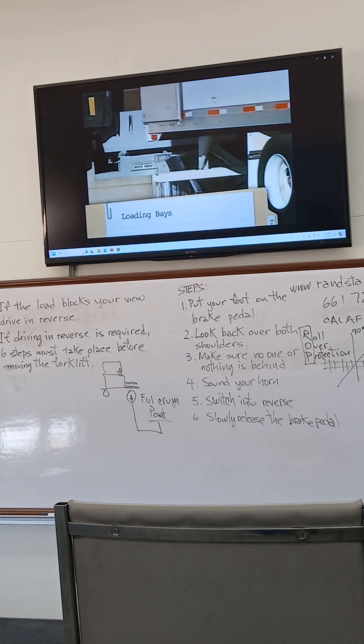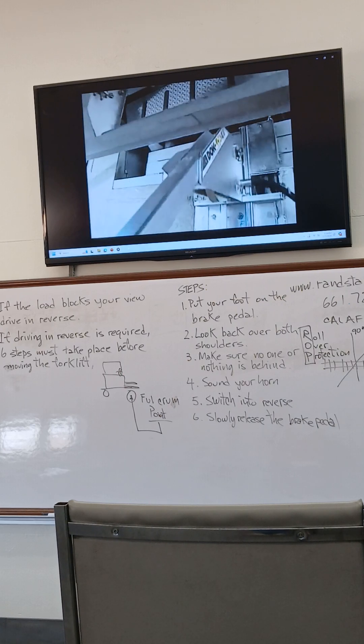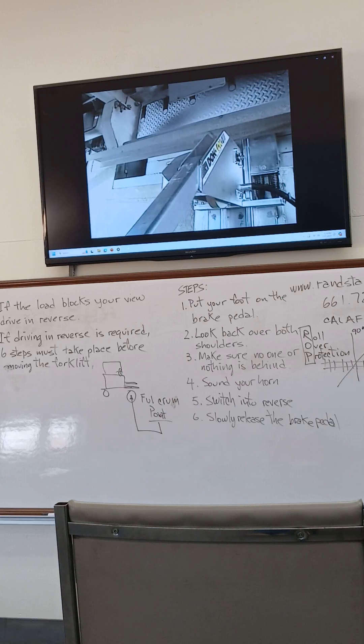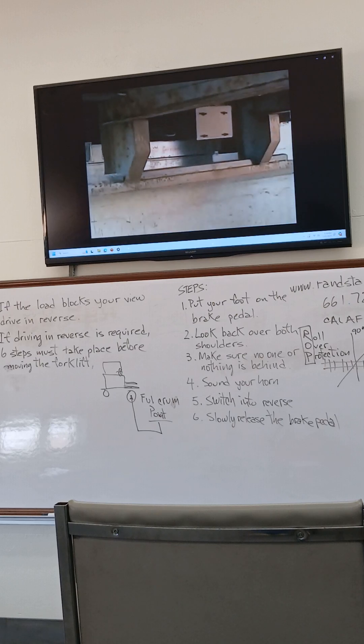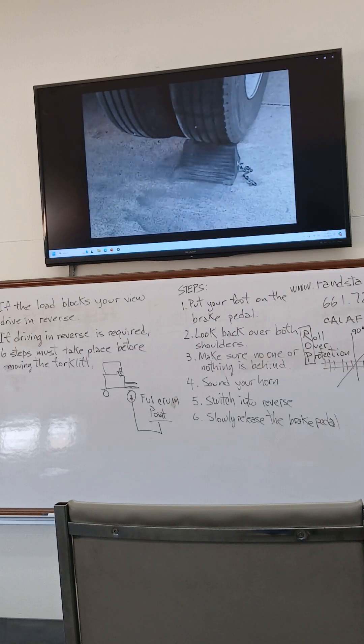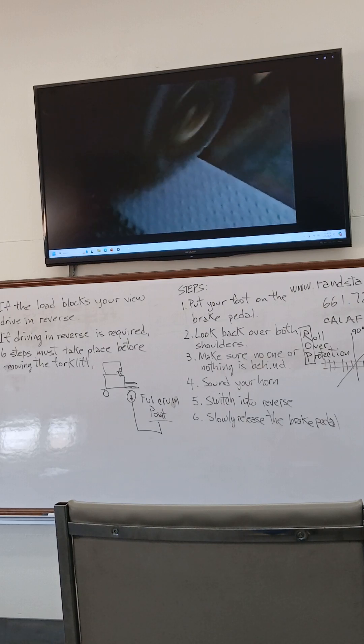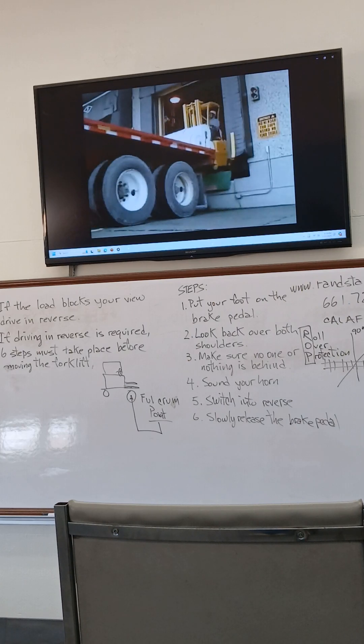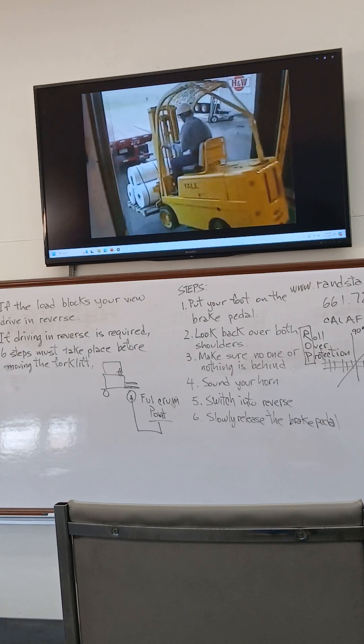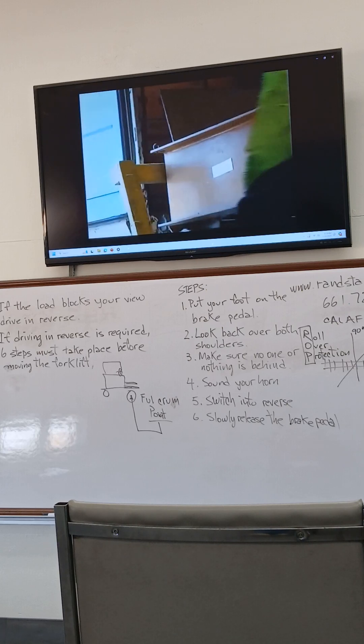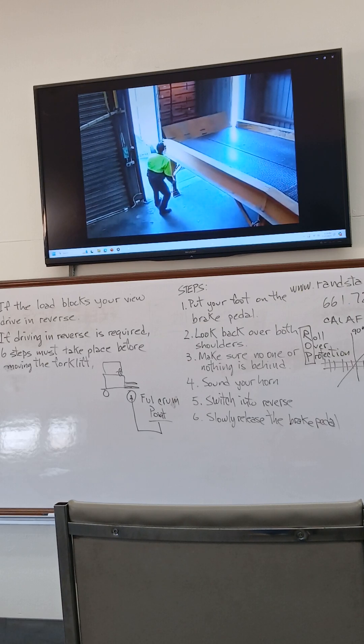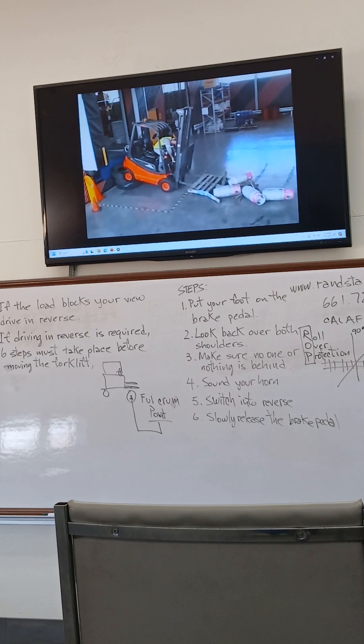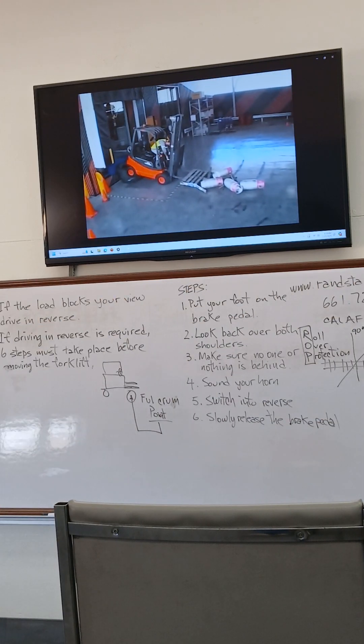Forklifts are often driven into trucks or trailers over a dock board, also known as a bridge plate at loading docks. If the truck or trailer is not secured to the dock or otherwise chocked, it can move over time. The dock board can then fall between the trailer and the dock as the forklift crosses it. A portable dock board must be secured in place to prevent it from moving. Always keep a safe distance from the edges of a loading dock or a ramp.